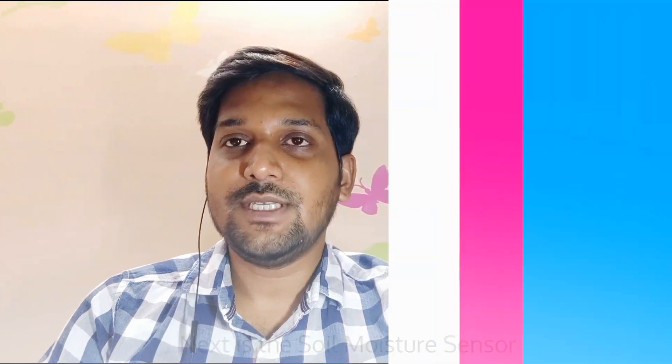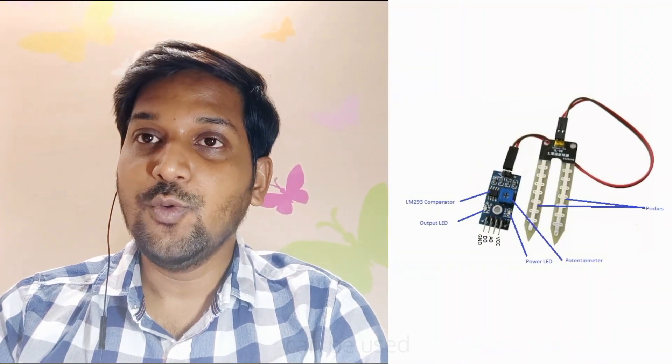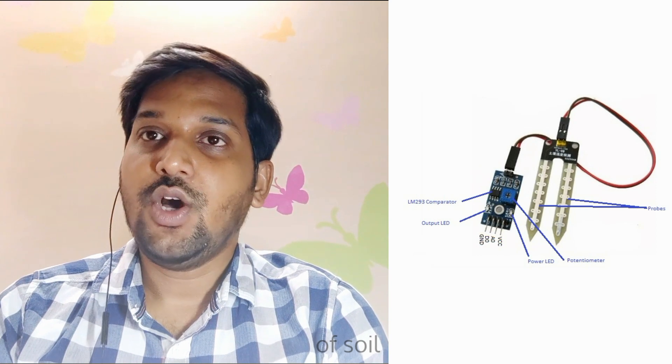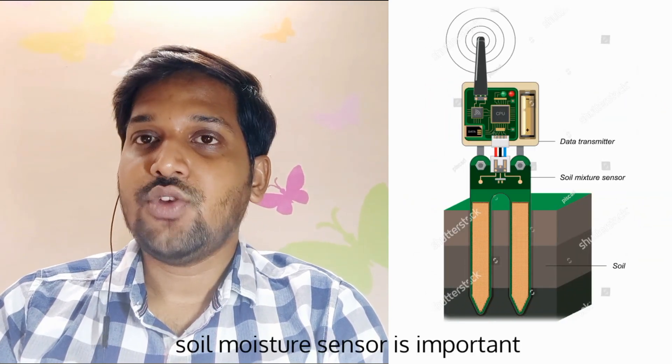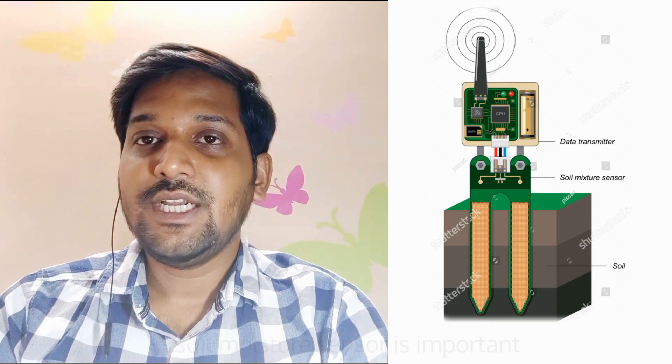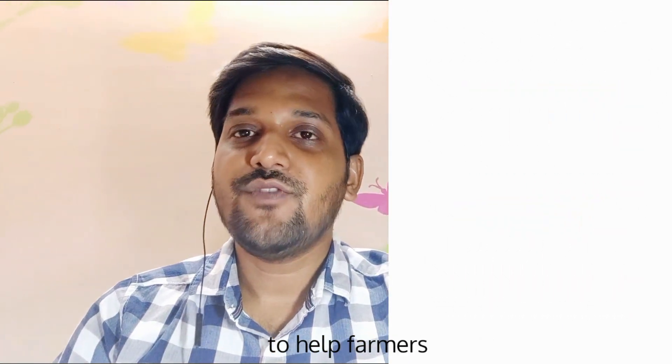Next is the soil moisture sensor. This moisture sensor can be used for detecting the moisture of soil or judge if there is water around the sensor. Soil moisture sensor is important in agriculture to help farmers.